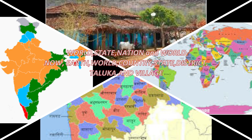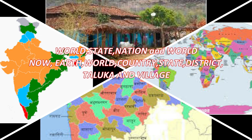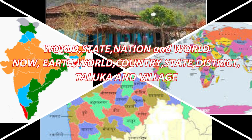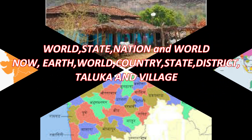India is my country — we have used this sentence in our pledge. You must have heard the words world, nation, and state. Now in this chapter we are going to see new words: earth, world, country, state, district, taluka, and even villages — through maps.